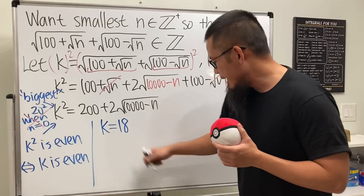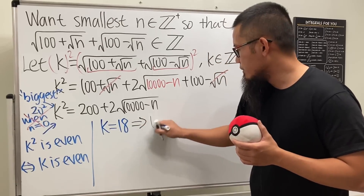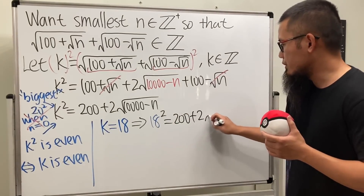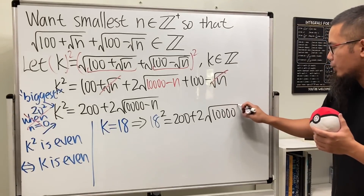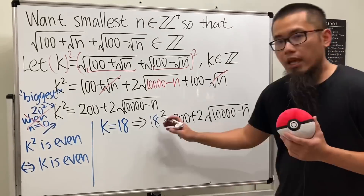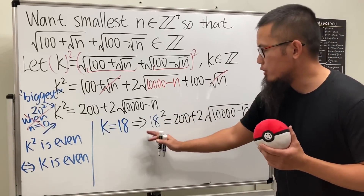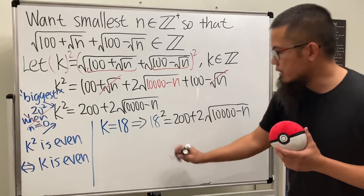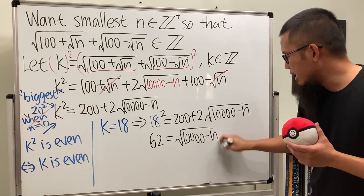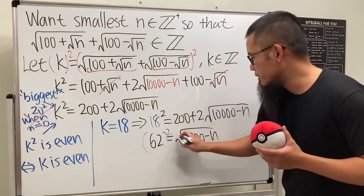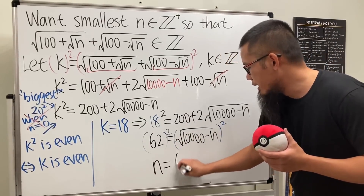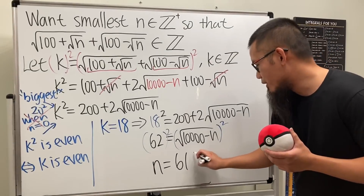We set k = 18 and plug back in: 18 squared equals 200 plus 2 times the square root of (10,000 minus n). So 18 squared is 324, and 324 minus 200 is 124, divided by 2 is 62. So we need the square root of (10,000 minus n) to equal 62. Squaring both sides and solving, we get n = 6156.